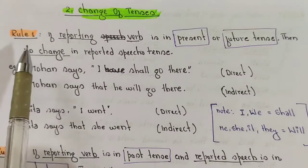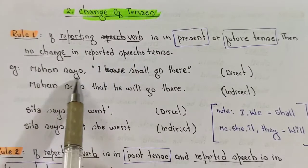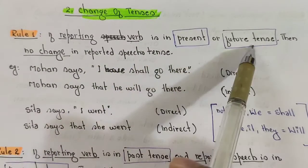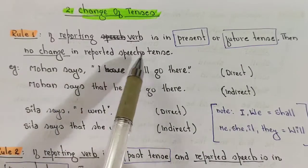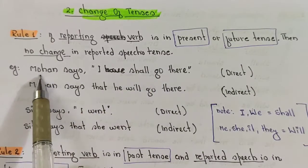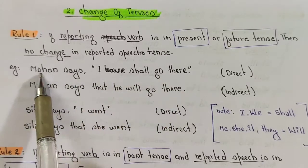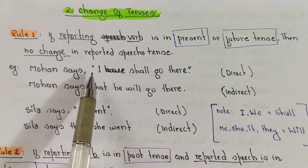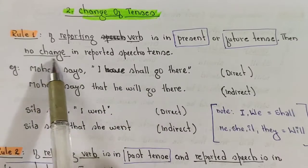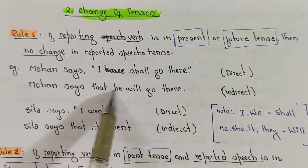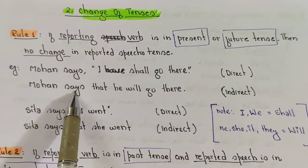Rule number one: if the reporting verb is in present or future tense, then there is no change in the reported speech tense. For example, 'Mohan says' — this is present tense — 'I shall go there.' There is no change in the reported speech while converting from direct to indirect.